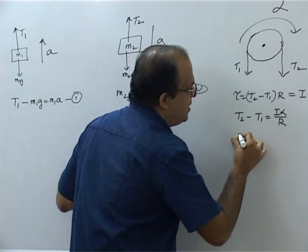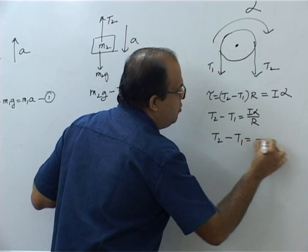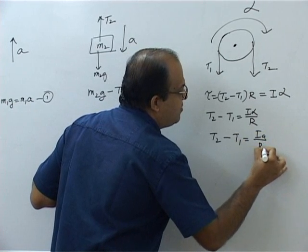Now there is no slipping. A equal to R alpha. So T2 minus T1 will be IA by R square.